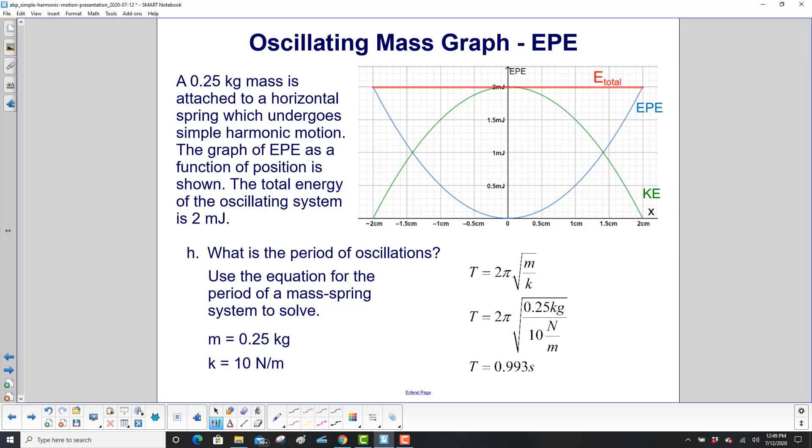What is the period of oscillations? Finally, a more simple question here. As long as you have the formula, which is 2 pi times the square root of m over k. Plug in our mass, which we have in kilograms. Plug in the value of spring constant we found. And the period is 0.993 seconds.